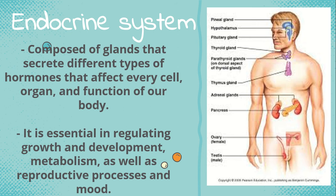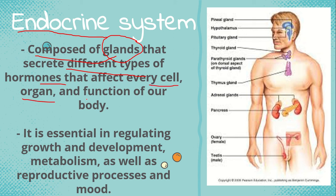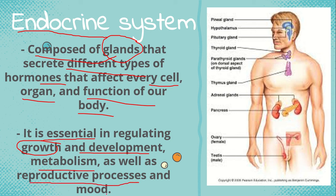The endocrine system is one of the body systems in our body. It is composed of glands that secrete different types of hormones that affect every cell, every organ, and the functions of our body. It is also essential in regulating growth and development, metabolism, and the reproductive processes and mood.